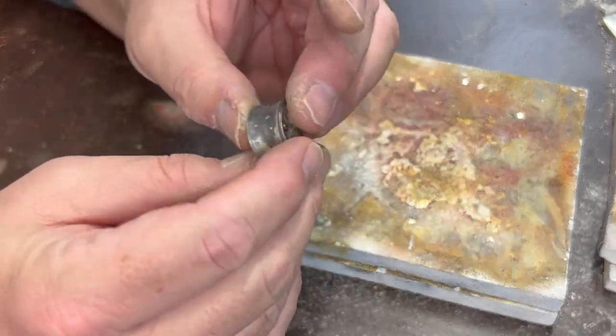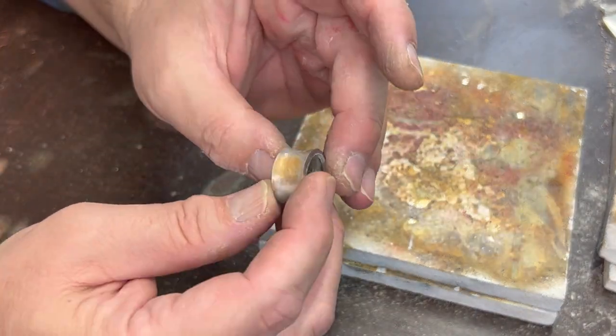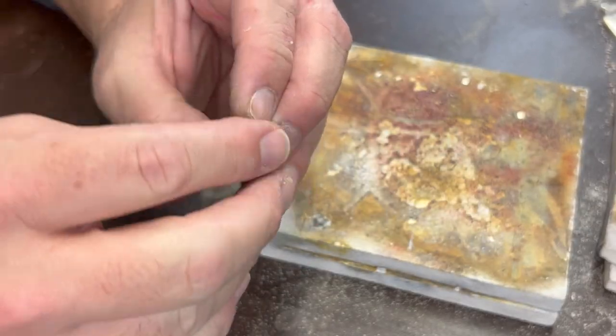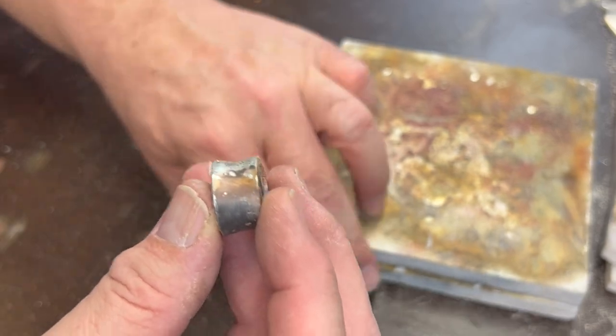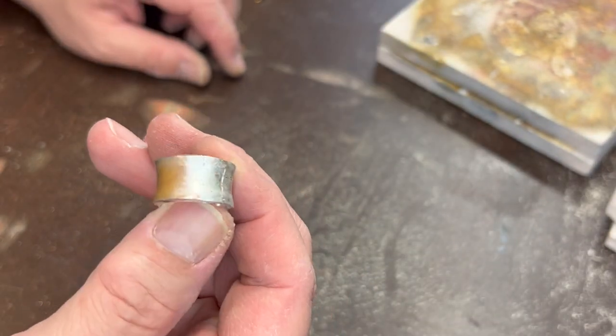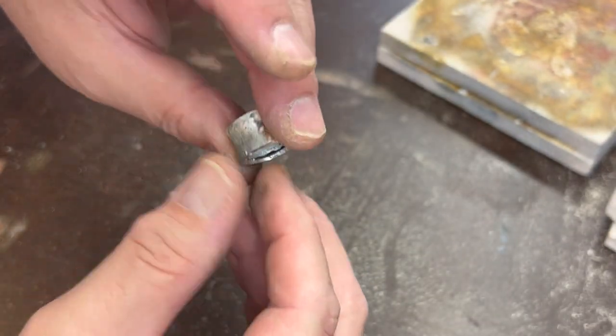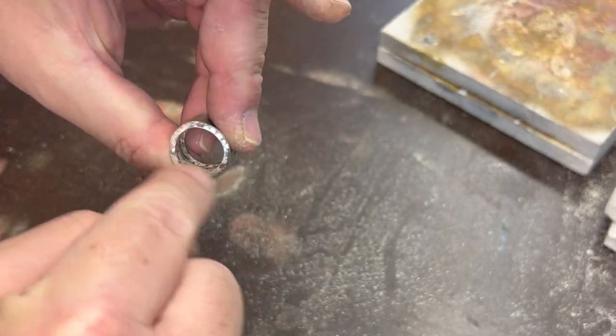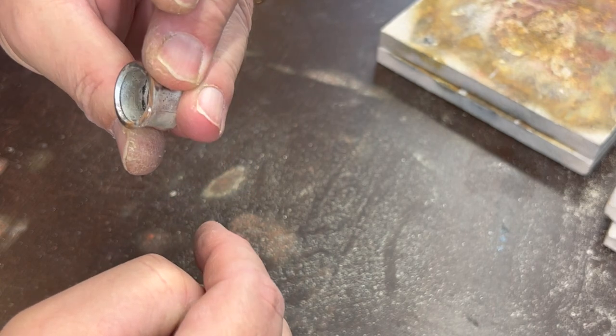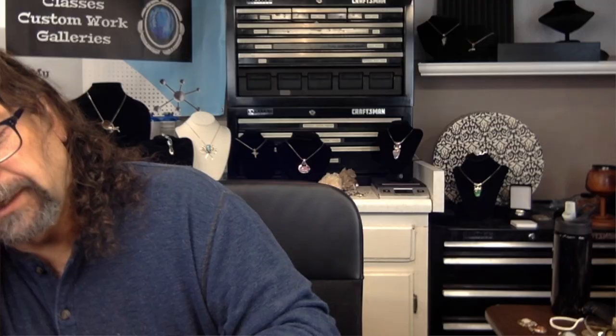Just trying to get rid of any bumps there. So you can see how it's kind of come out relatively concave like that. So I'm going to do a little cleanup with the file and we'll see what we end up with. It's a little bit uneven and stuff, so I need to work on that a little bit, and then I'll pickle it and we'll take a look at it.